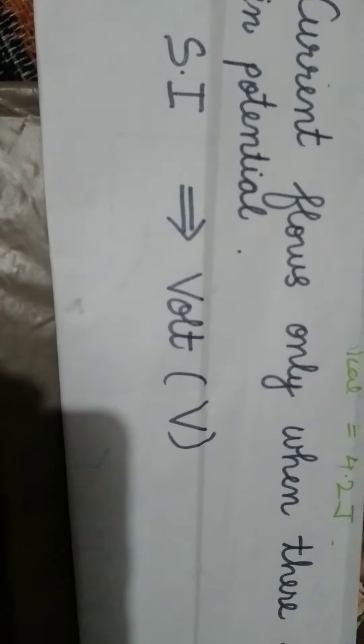Now let's see the next important thing: current flows only when there is a difference in potential. The water flowed only when I made a difference in its height. When I changed the level of height, only then water flowed. Same thing is written here. In physics, SI units are the most important.